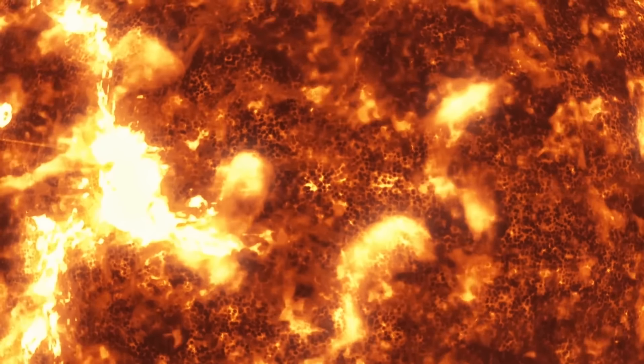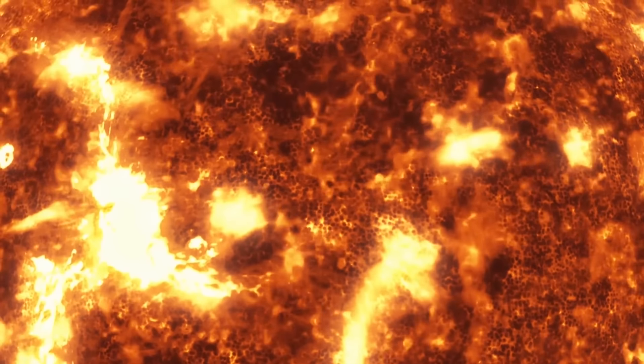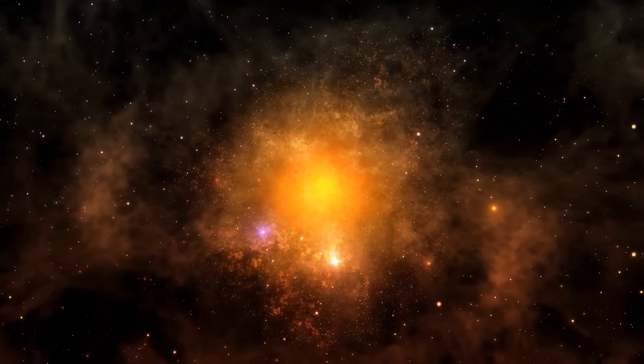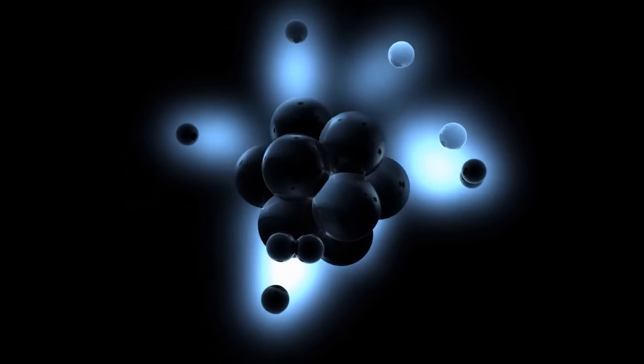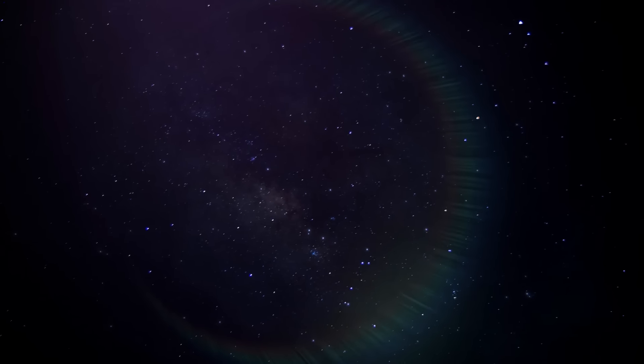Nonetheless, the universe was practically too hot for light to shine for the first 380,000 years or so. However, matter started to cool after 380,000 years, and it cooled down enough for atoms to form. The universe descended into darkness at this stage since no stars or other luminous objects had yet to appear.